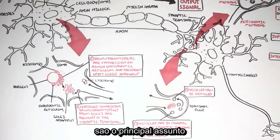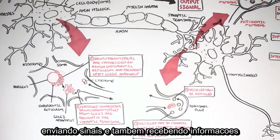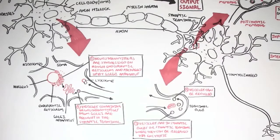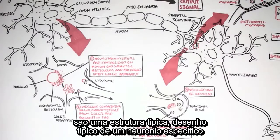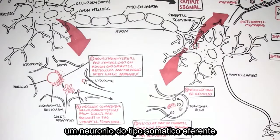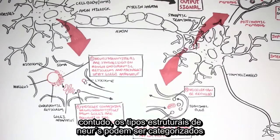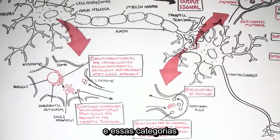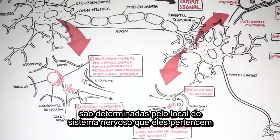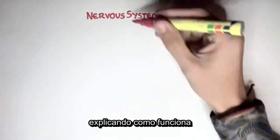Neurons are a big deal for cellular communication — for sending out signals and also receiving information. The neuron I just drew is actually a typical structure of a specific type of neuron: an efferent somatic neuron. However, there are a few types of structures neurons can be categorized into. These structural categories can be determined by which part of the nervous system the neurons belong to. I'll just draw a diagram to explain this.